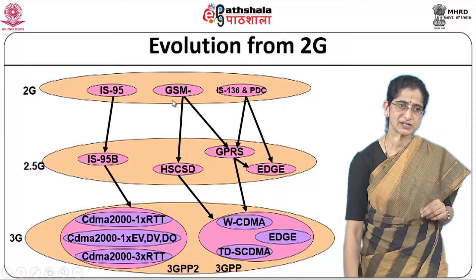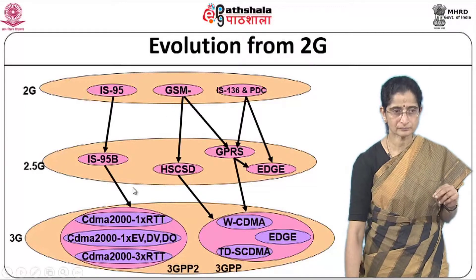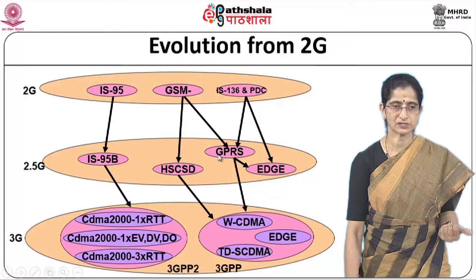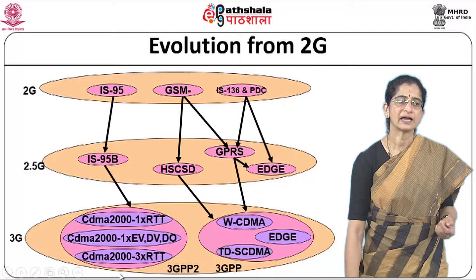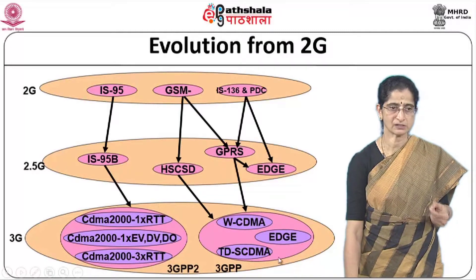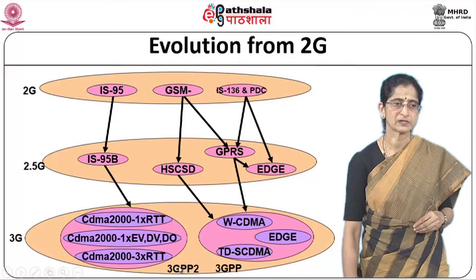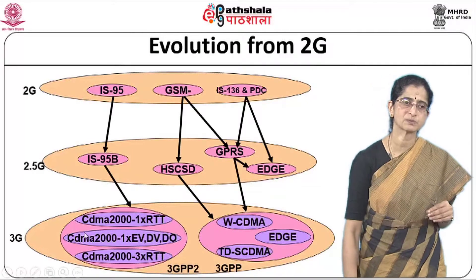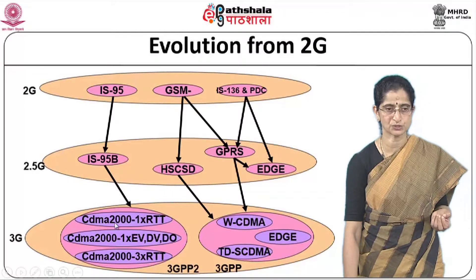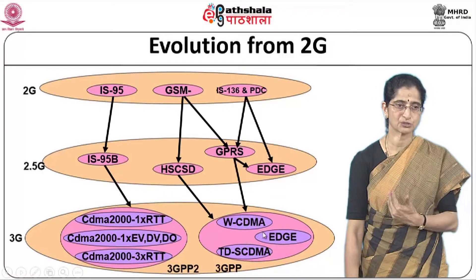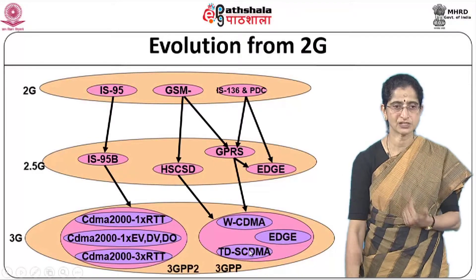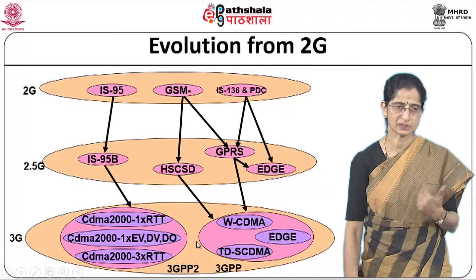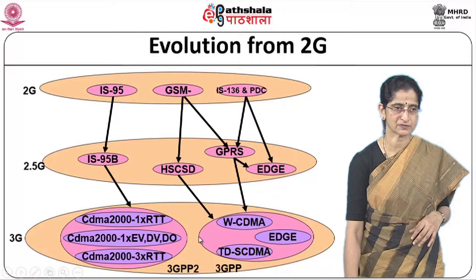We start off with GSM in 2G, then moved in 2.5G to GPRS, which is a packet switching service that was added. Then there was the 3G network standard that was proposed. In 3G, we actually had two different technologies: one based on CDMA2000 standard and another based on an evolution using WCDMA, TD-SCDMA, and UMTS-type technologies.